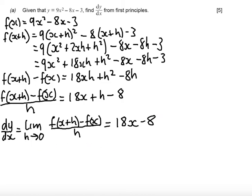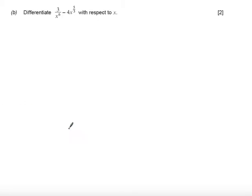Let's have a look at part b. Part b says differentiate 3 over x to the power of 6 minus 4x to the power of 5 thirds with respect to x. First thing to do before you do anything is rewrite this reciprocal using indices. So, this is now going to be written as 3 times x to the power of minus 6. Please don't differentiate and rearrange in the same step. Make sure you've got your expression ready for differentiation before you attempt to differentiate it.